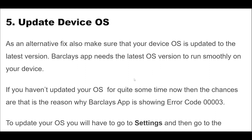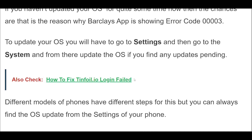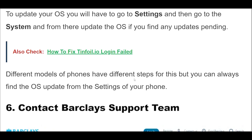Also make sure that your device OS is updated to the latest version. The Barclays app needs the latest OS version to run smoothly. If you haven't updated your OS for some time, that may be why the Barclays app is showing error code 00003. Go to Settings, then System, and update the OS if there are any pending updates. Different phone models have different steps, but you can always find the OS update in your phone's settings.